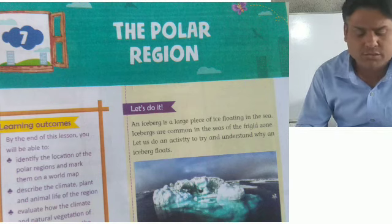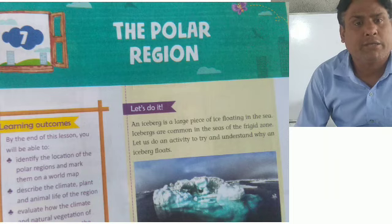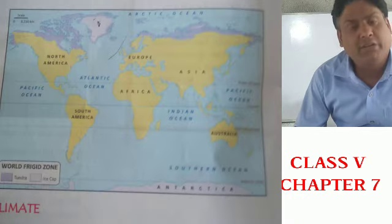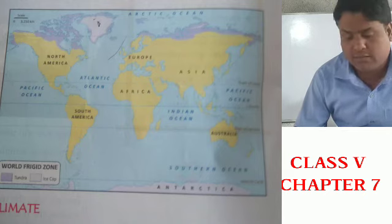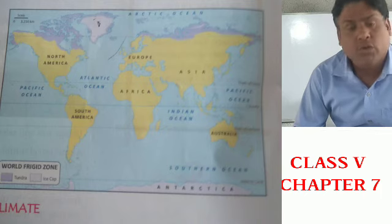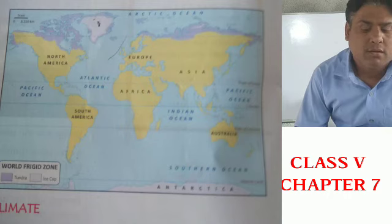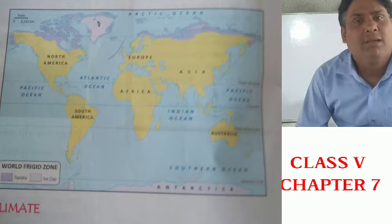In this chapter, we will study about the climatic condition and the life of the people in the polar region, towards the north pole or towards the south pole. There is a fact given here about what is an iceberg — you have to study it yourself, and if you don't understand, let me know in the comment section. We will come to know about the location of the polar region and the life, climate, plant life, animal life, etc. in those areas.